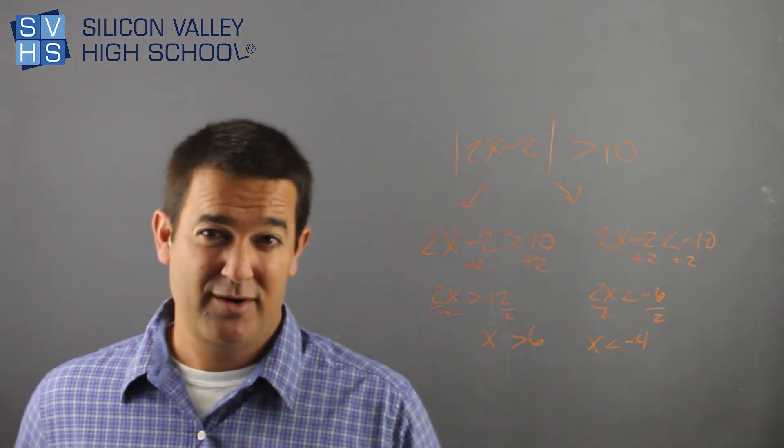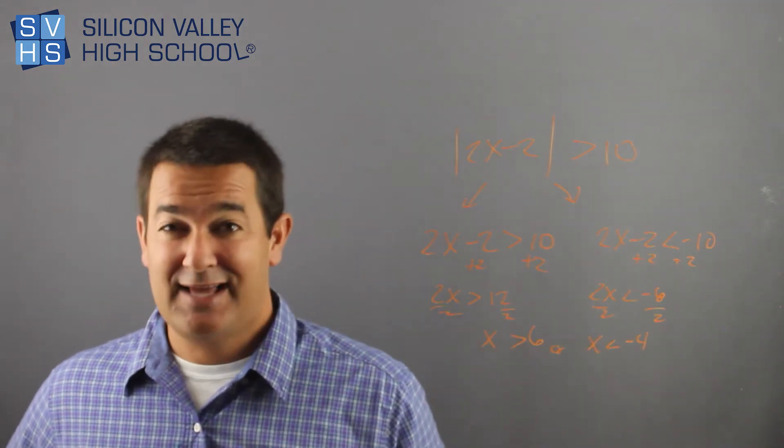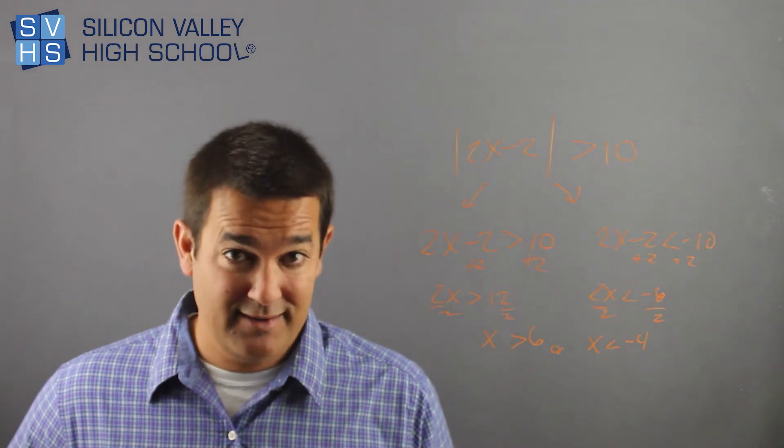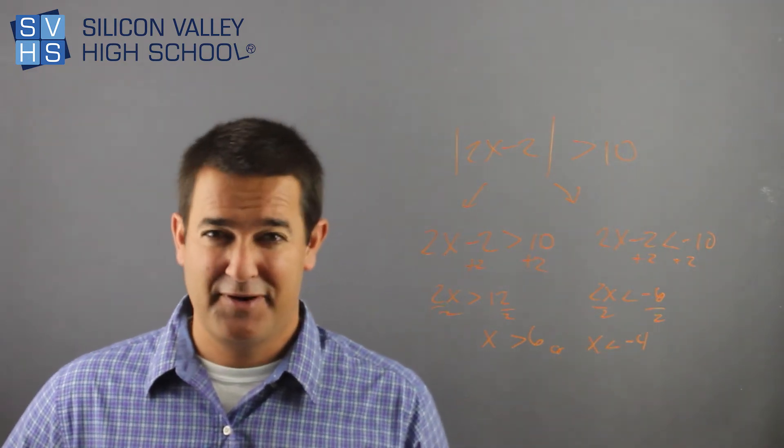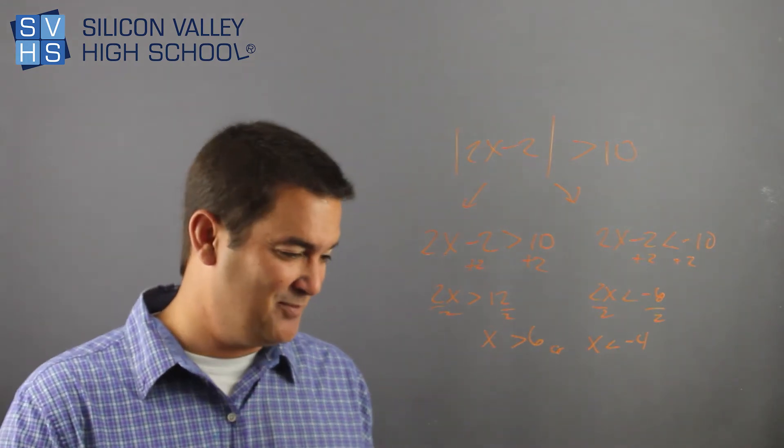Again, this is obviously an OR answer. You can just box them like this, or you can put OR in between them. Because the answer is x is bigger than 6, or the answer is less than negative 4. No number is true to both those things. So you'd have two answers. That would be your answer. Done.